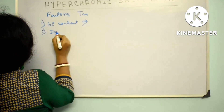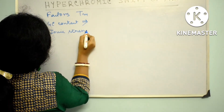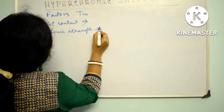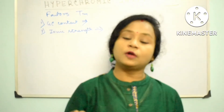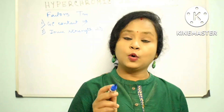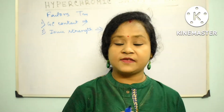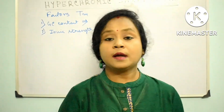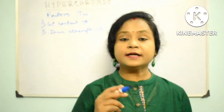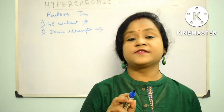Point number two: ionic strength. Tm is also dependent on ionic strength. The lower the ionic strength of the solution, the lower the melting temperature. DNA is a polyionic molecule; the salt shields the negative charges on each phosphate. When the charges are not shielded, electrostatic repulsion makes it energetically more favorable to separate the strands.